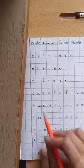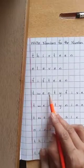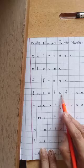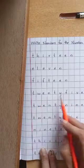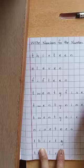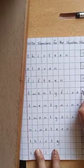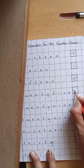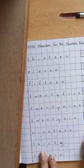Next one is T-W-E-N-T-Y-F-I-V-E. 25. We have to write here 25. Okay, like this.